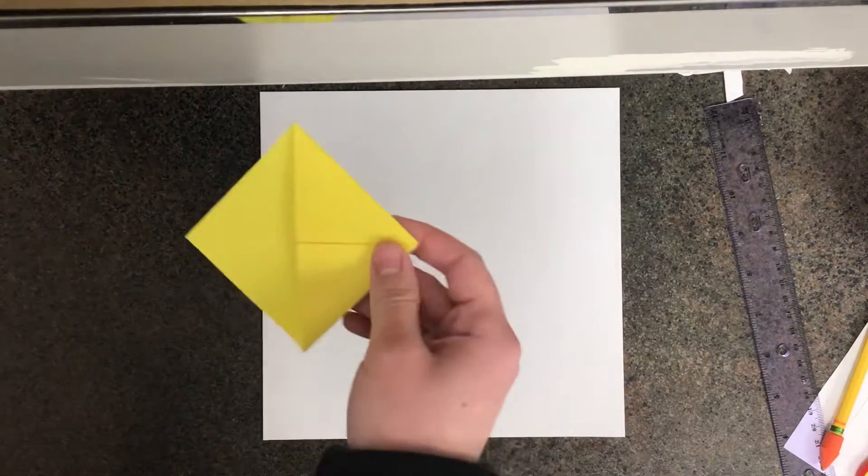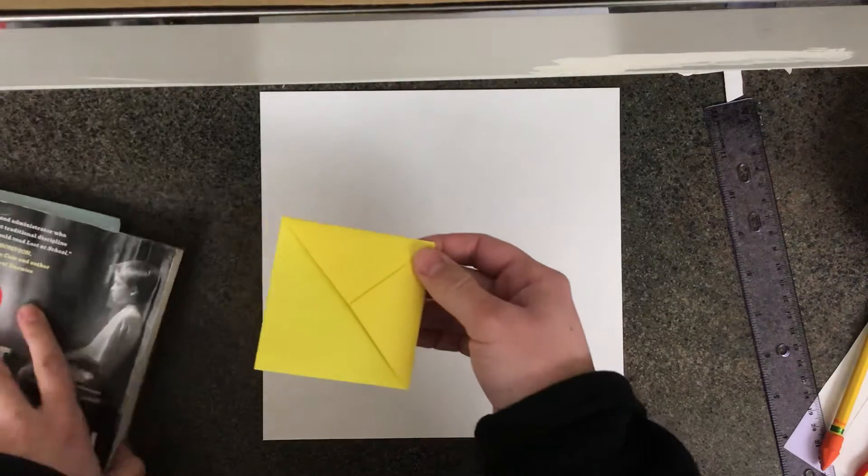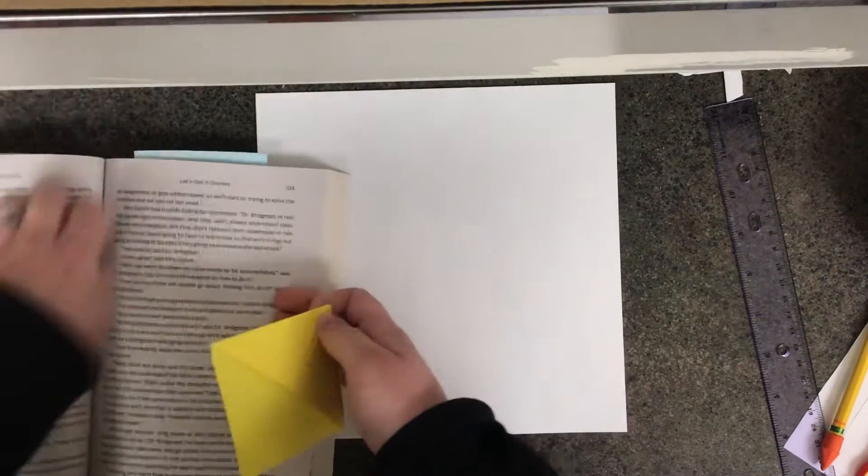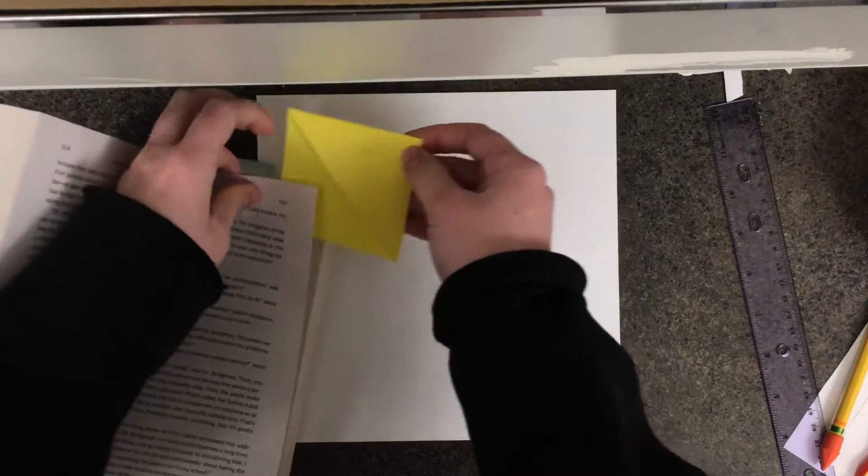This is a cool bookmark that you can put on the corner of your book. So if you have a book and you're on a page, you can stick it in the top corner like this, and you've got a bookmark.